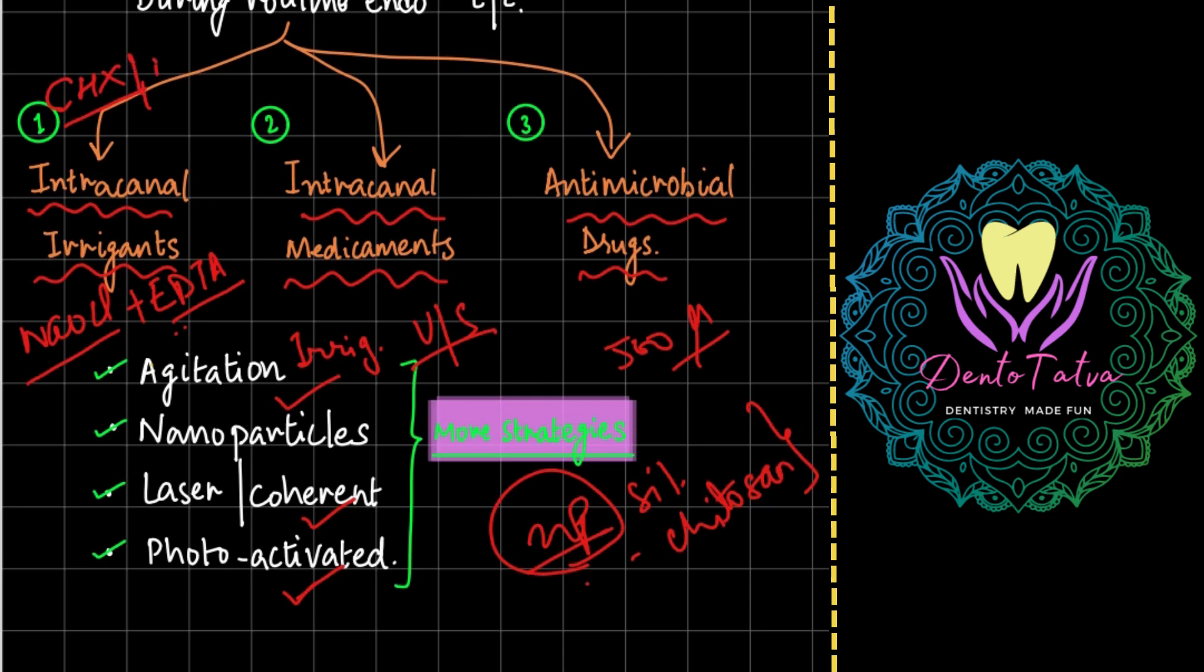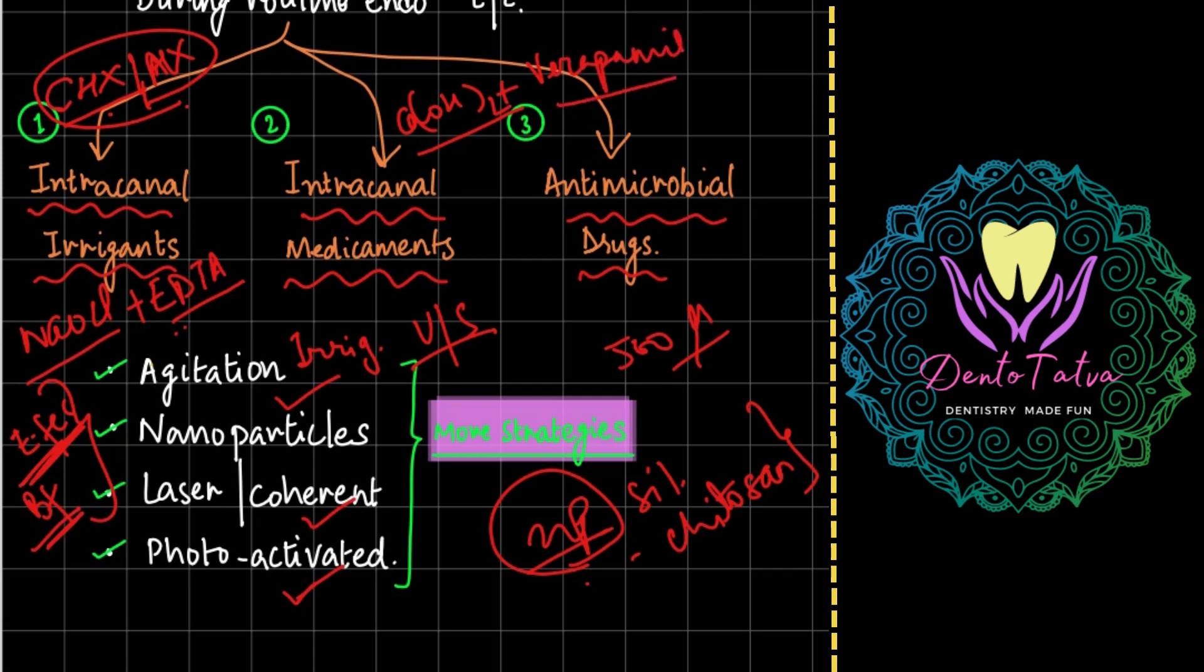So in secondary infections, retreatment infections, E. faecalis biofilm is the most prominent one. And against this, chlorhexidine or alexidine are the most effective irrigating solutions. In terms of intracanal medicaments, calcium hydroxide is not very effective against the E. faecalis biofilm, but if used along with antimicrobial drug such as verapamil, studies have shown that it becomes effective. So I hope this lecture helps you in some way.